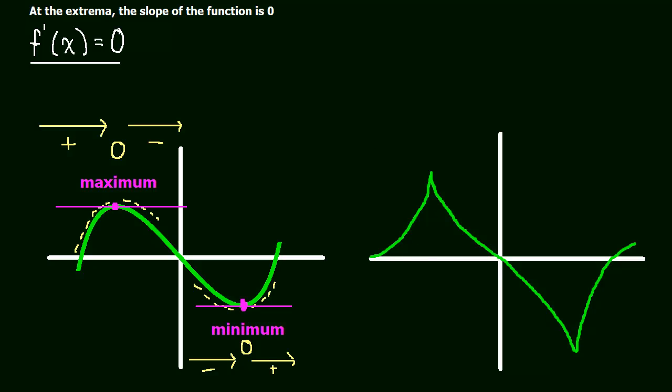So there's a jump in the slopes, and it turns out that this point right here does not have a derivative. Neither does this point down here. So this is still a max, and this is still a min, but those points don't have any slope. And I don't mean zero slope. I mean their slope is undefined.